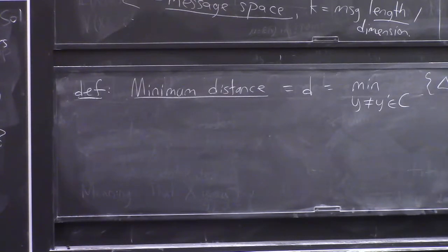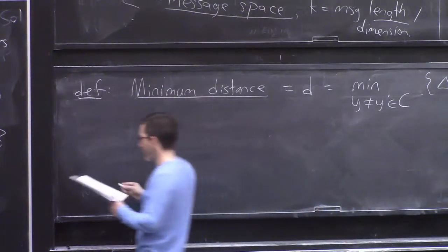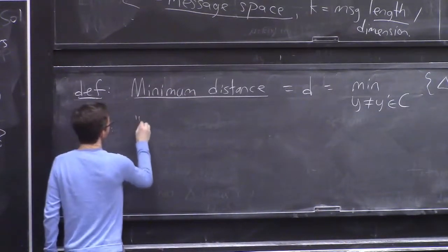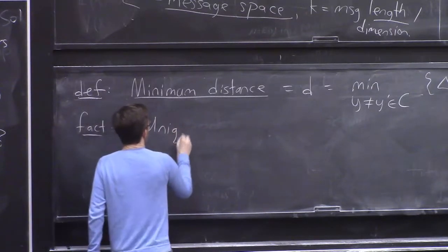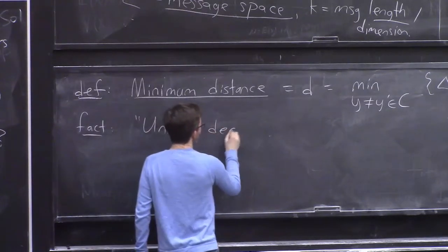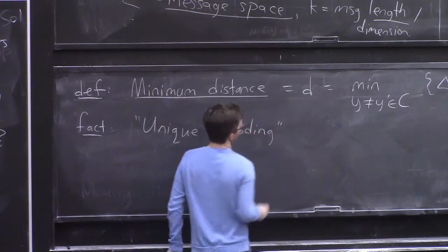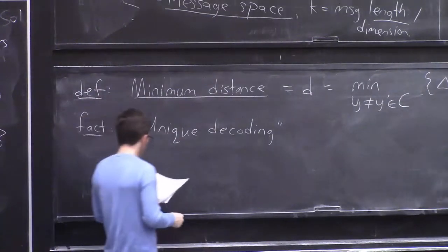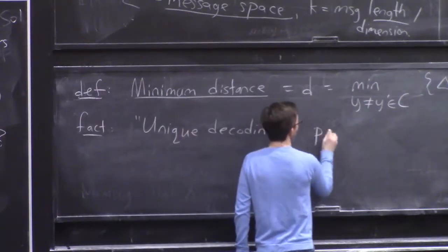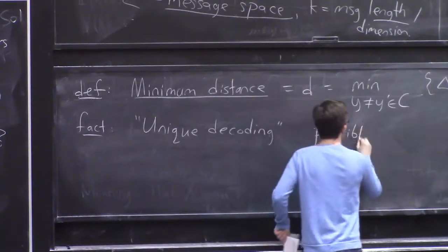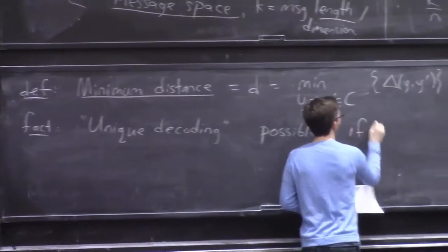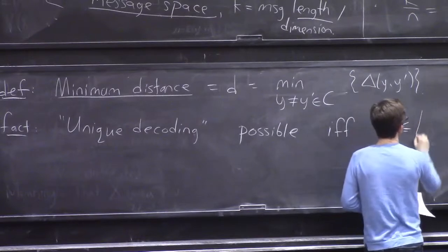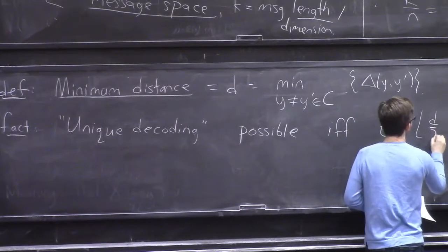And the fact that I just tried to convince you of in words is that this process called unique decoding, in other words, the ability to take a received word with up to T corruptions and figure out the unique codeword that it's closest to, is possible for a given code if and only if the error bound T is at most basically the minimum distance over T.